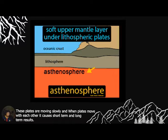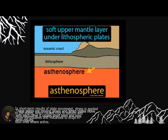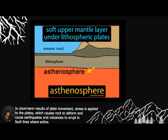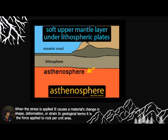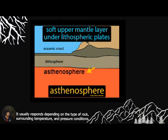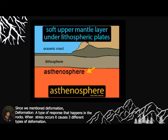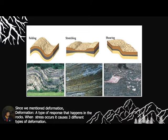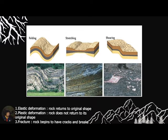These plates move slowly, and when plates move against each other, it causes short-term and long-term results. In short-term results, stress is applied to the plates, causing rocks to deform and causing earthquakes and volcanoes to erupt. When stress is applied, it causes a material change in shape — deformation or strain. In geological terms, stress is force applied to rock per unit area. There are three types of deformation: elastic deformation, where rock returns to its original shape; plastic deformation, where rock does not return to its original shape; and fracture, where rock develops cracks and breaks.